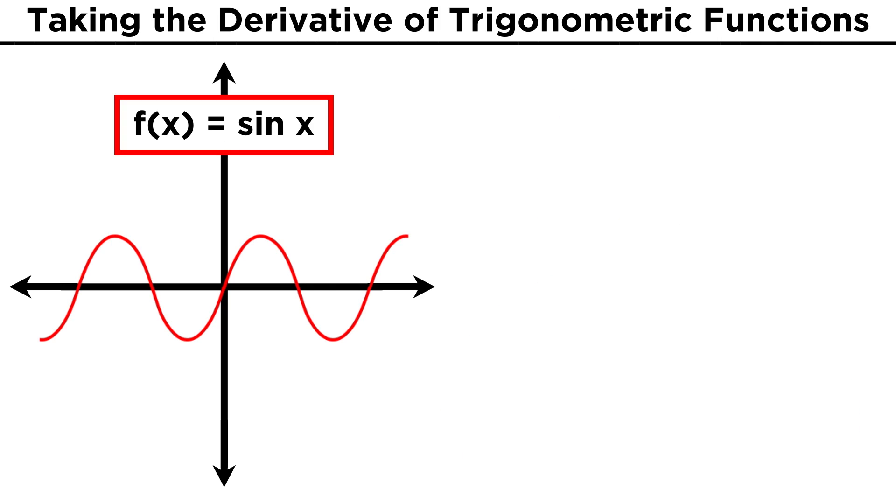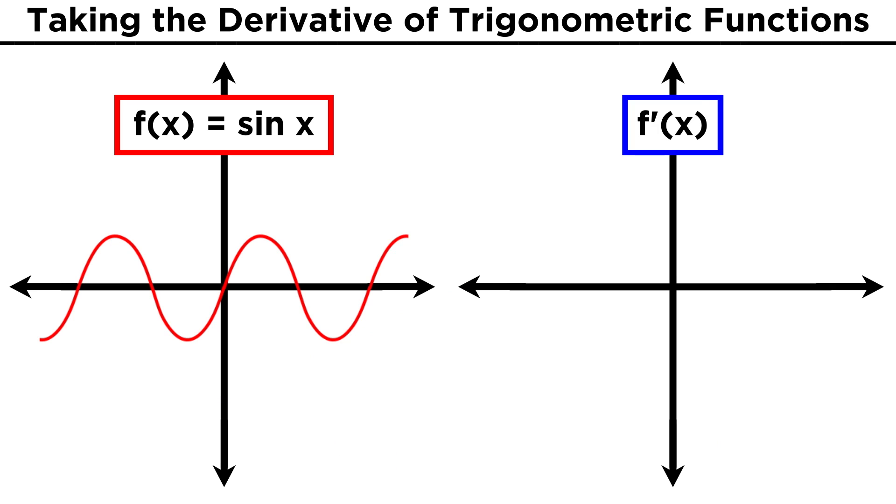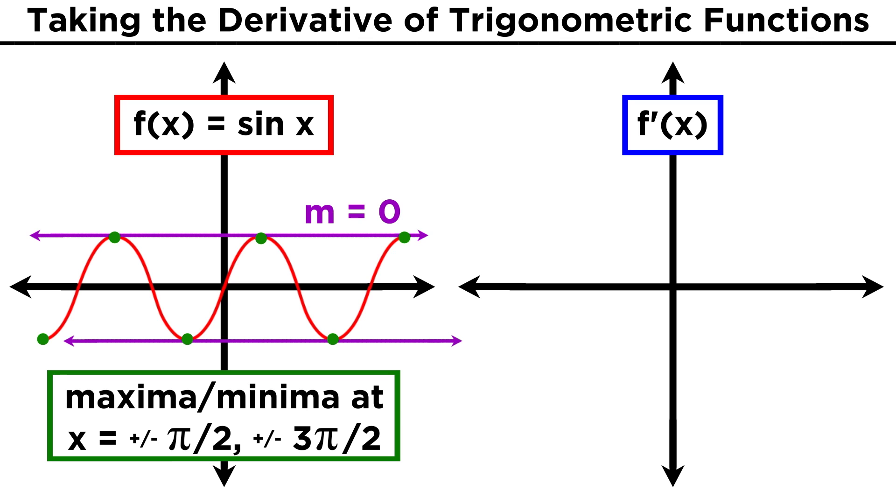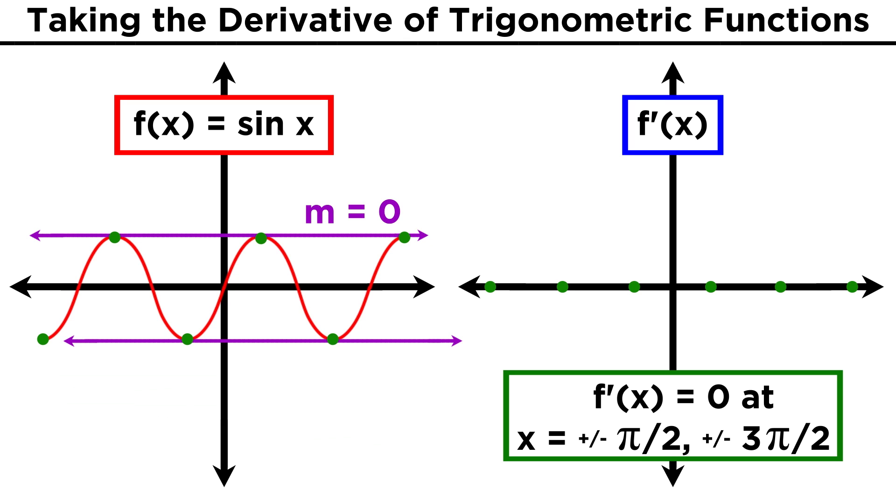Let's start by looking at the graph of sine x. Using the interpretation of the derivative as being the slope of the tangent line at any given point, let's try to envision what the graph of the derivative of sine x would look like. Well, at all the maxima and minima, the tangent line is horizontal, so the slope is zero. That means the derivative must equal zero at these points.